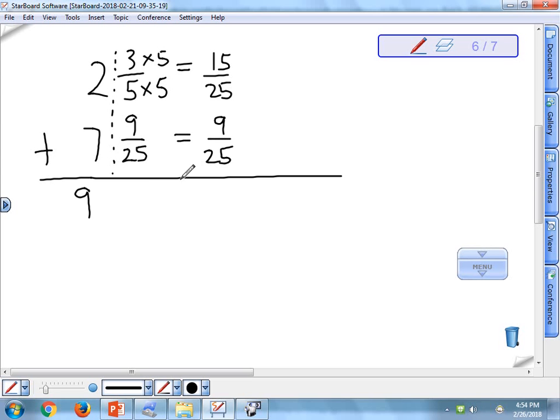I now add the two fractions together. I get 24 over 25. That cannot be reduced any further. So my answer is 9 and 24 twenty-fifths.